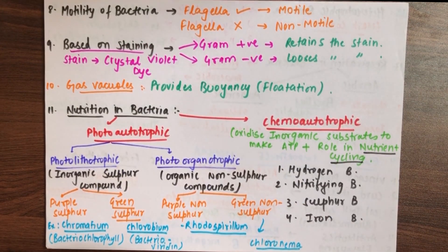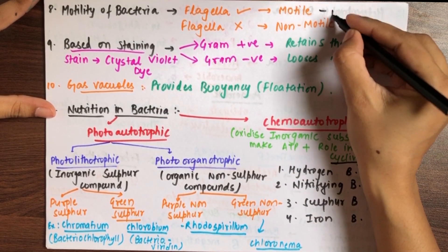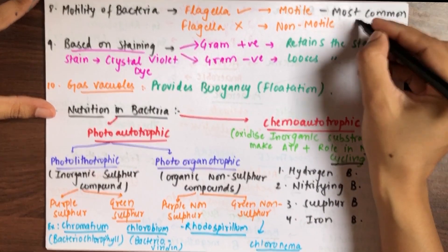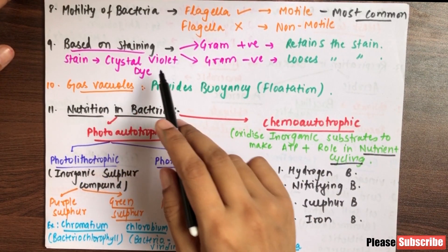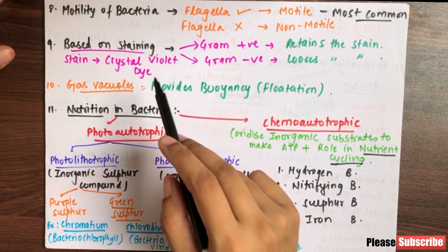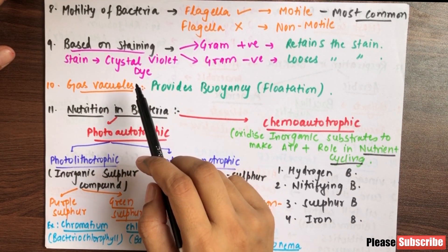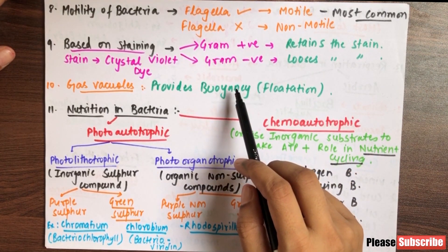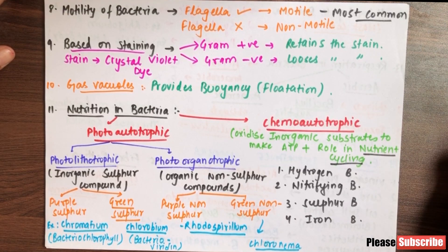Regarding motility, bacteria can be motile or non-motile — both types exist. If flagella are absent, they are non-motile. Based on staining, we do gram staining using crystal violet dye, a purple-colored dye. On that basis, there are two types: gram-positive bacteria, which retain the stain, and gram-negative bacteria, which lose the stain.